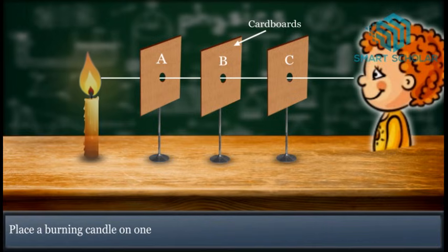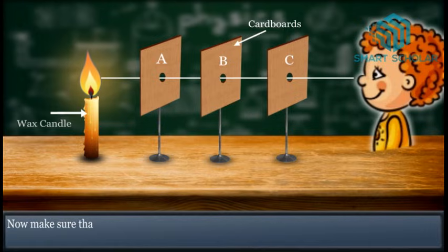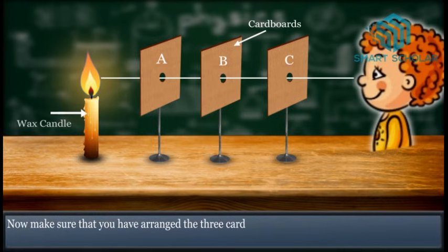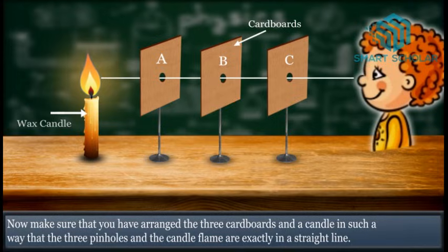Place a burning candle on one side of cardboard A at the level of the hole. Now make sure that you have arranged the three cardboards and the candle in such a way that the three pin holes and the candle flame are exactly in a straight line.